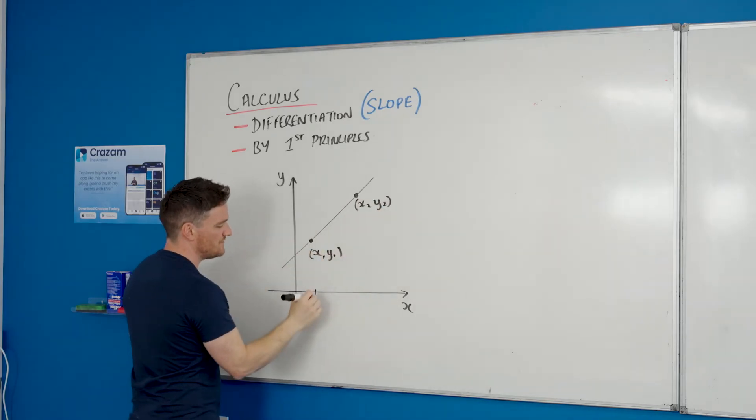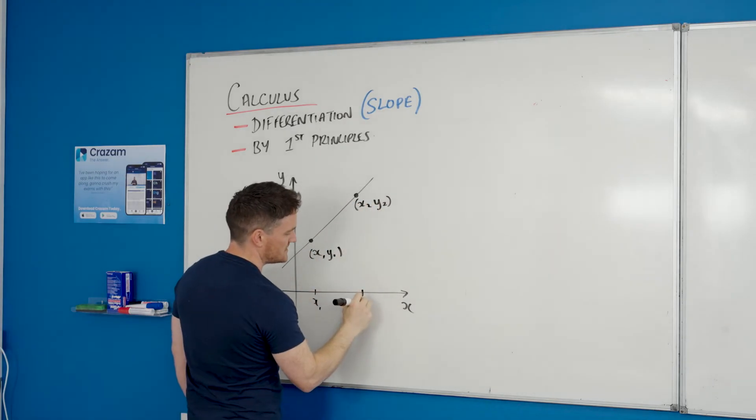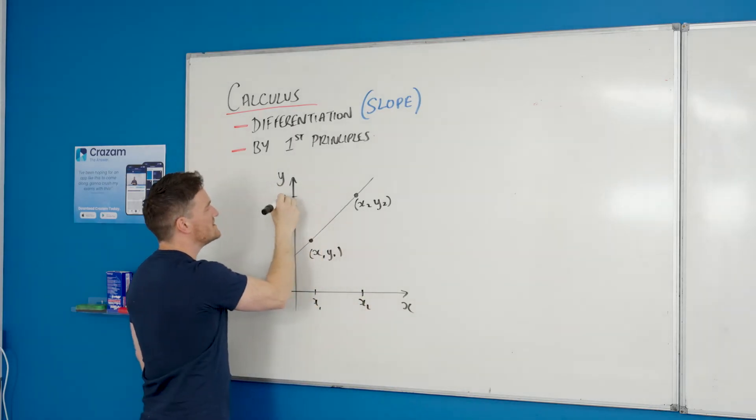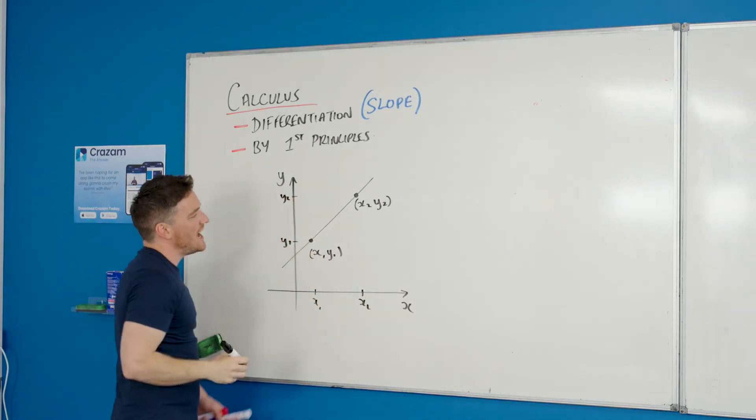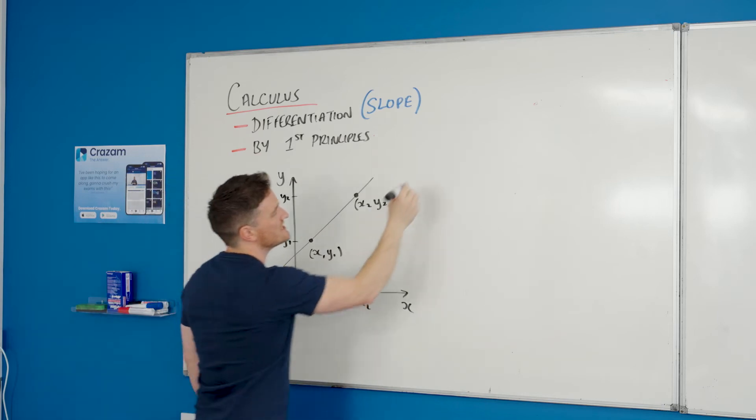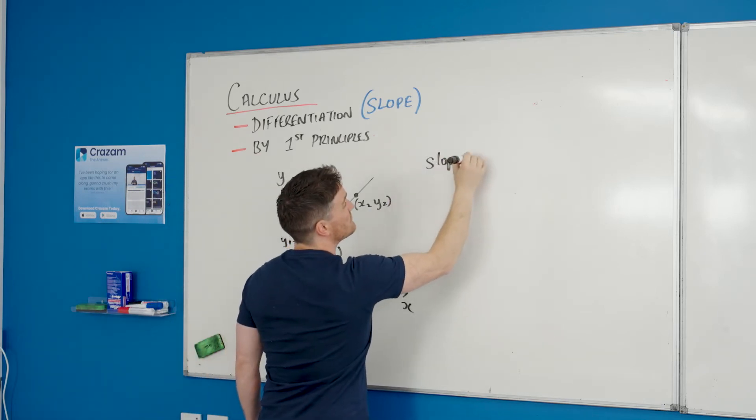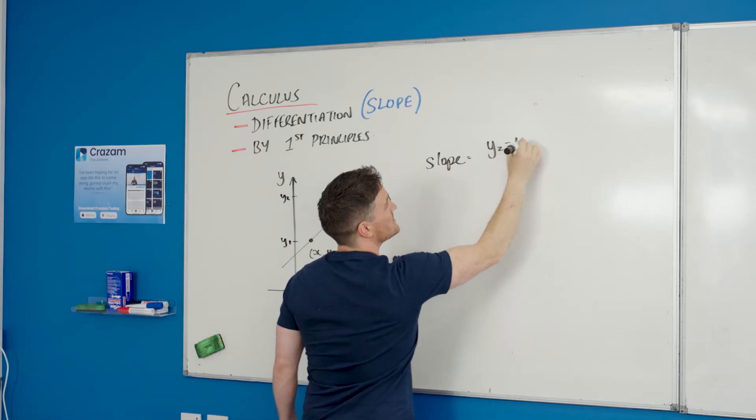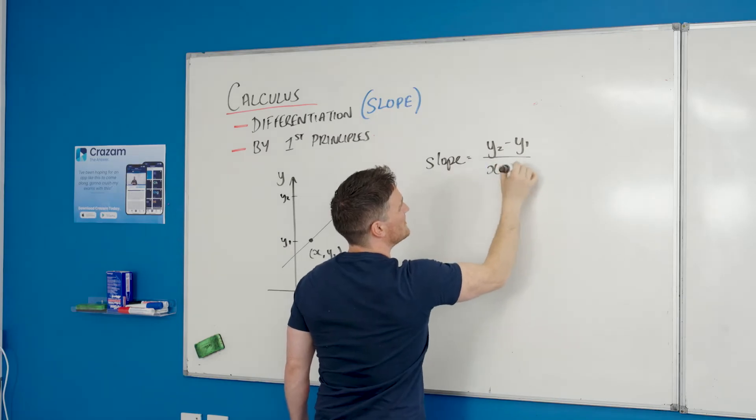We call this x1, x2, and y1, y2—which hopefully you've seen at junior cert at some point—x1, x2, y2, y1. And in order to find the slope of it, we would say, use our equation which is in your formula booklet: y2 minus y1 over x2 minus x1.